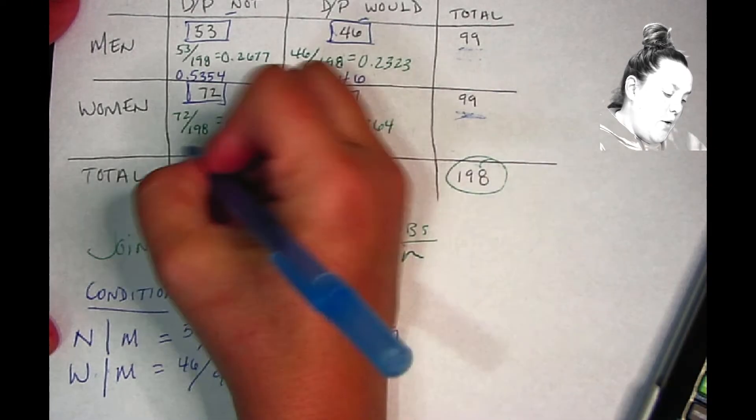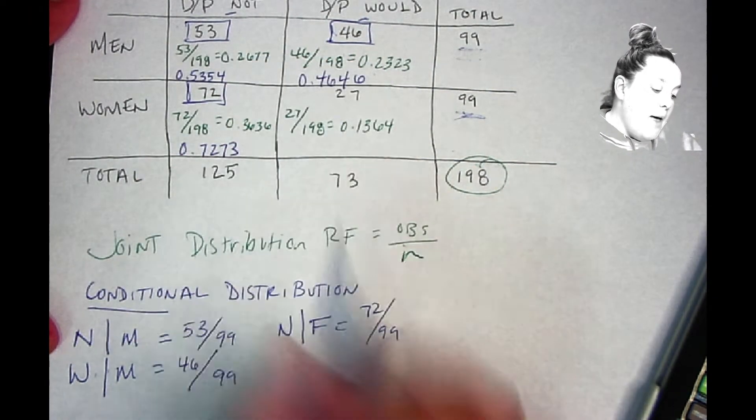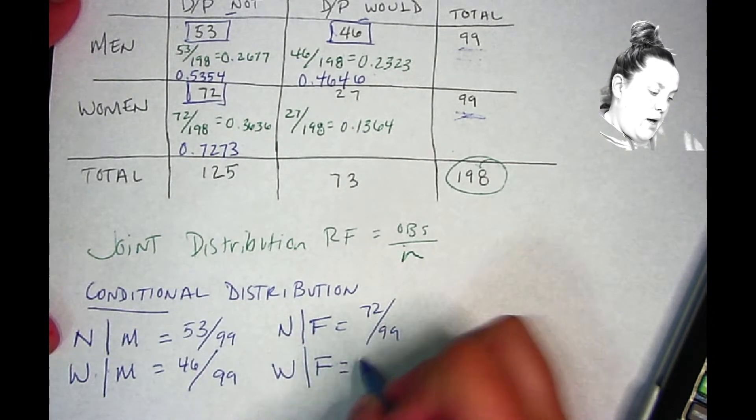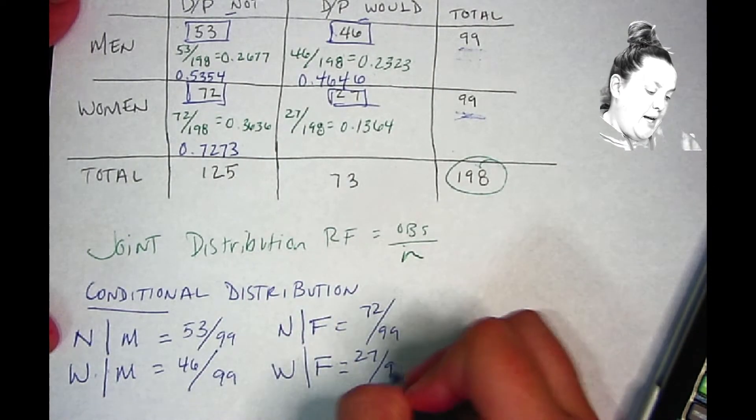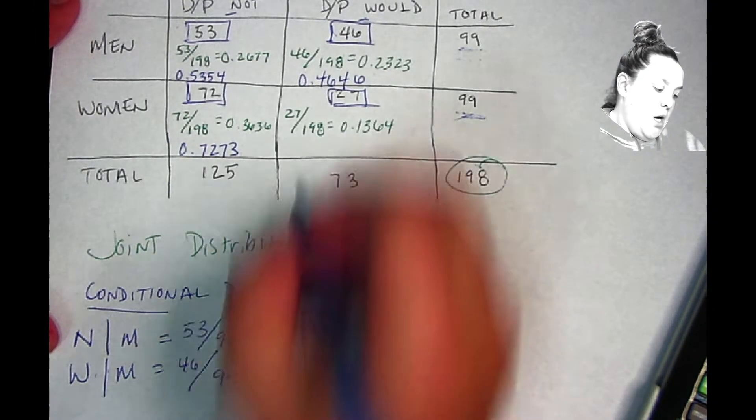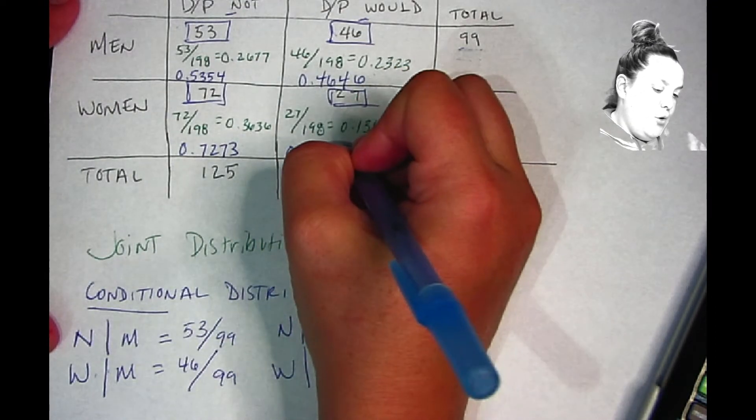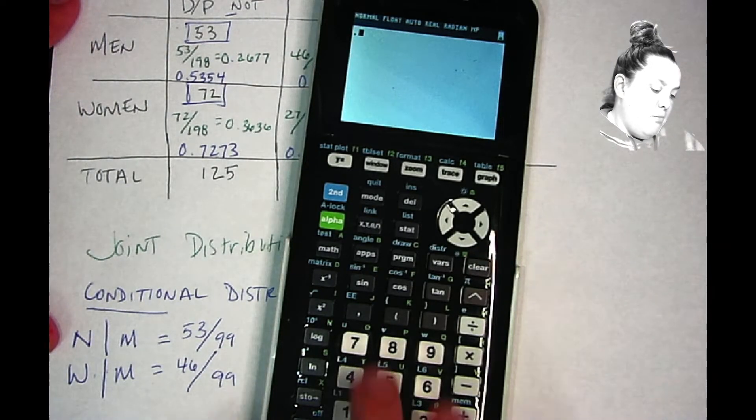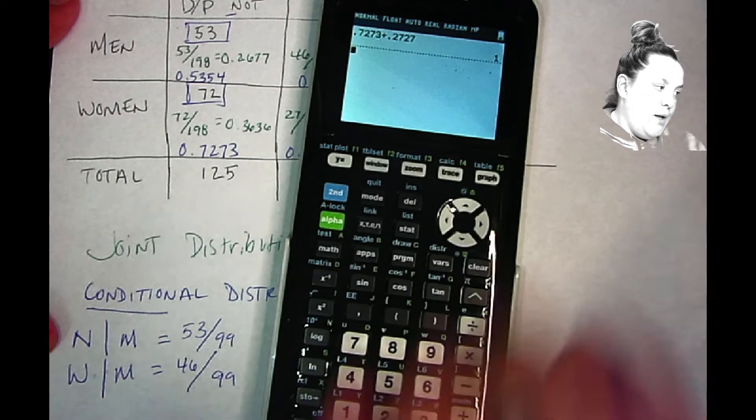And then we have would given they're female, and we have the 27, that's our observed count, and then we have 99 as our denominator. So that gives me 0.2727. And again, just to verify that that's been done correctly, 0.7273 and 0.2727 should add up to one, and they do. So those were calculated correctly.